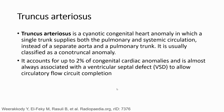Truncus arteriosus is a cyanotic congenital abnormality in which a single trunk supplies both the pulmonary and systemic circulation, instead of a separate aorta and a pulmonary trunk. It is usually classified as a conotruncal anomaly. It accounts for up to 2% of congenital cardiac anomalies and is almost always associated with a ventricular septal defect (VSD) to allow circulatory flow circuit completion.